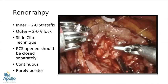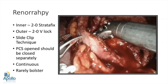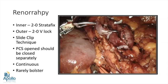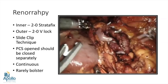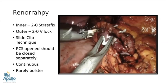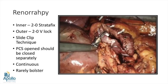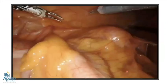The next step is the inner renorrhaphy. I usually start with a continuous suture where the medulla is sutured; any open PCS system is sutured individually. The sutures are tied using the sliding clip technique in a continuous manner, and usually no bolster is used. The outer layer renorrhaphy is done with 2-0 V-Lock suture in a continuous method. Once the renorrhaphy is complete, we remove the clamp and observe the kidney for at least five minutes, reducing intraoperative pressure to check for bleeding — this step is very important to reduce post-operative hemorrhage.